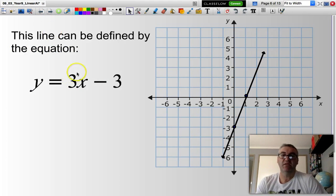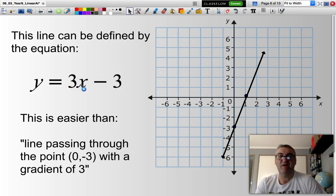Now, this particular line can be represented by this particular equation. It's far easier to say draw a line using the equation y equals 3x minus 3, than saying draw a line passing through the point (0, -3) with a gradient of 3. It is a convenience thing.